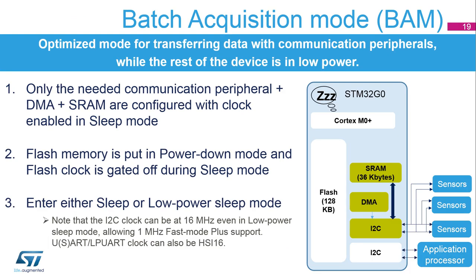Batch acquisition mode is an optimized mode for transferring data. Only the needed communication peripherals plus the DMA plus the SRAM are configured with clock enabled in sleep mode. Flash memory is put in power-down mode and the flash memory clock is gated off during sleep mode. Then it can enter either sleep or low-power sleep mode. Note that the I2C clock can be at 16 MHz even in low-power sleep mode, allowing support for 1 MHz fast mode plus. The USART and LPUART clocks can also be based on the high-speed internal oscillator. Typical applications are sensor hubs.